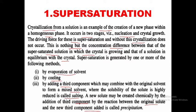Super saturation is generated by one or more of the following methods. First, by evaporation of the solvent, that is vaporization. Second, by cooling. Third, by adding a third component which may combine with the original solvent to form a mixed salt where the solubility of the solute is highly reduced — this is called salting. New solute may also be created chemically by the reaction between the original solute and a new third component — this is called precipitation.